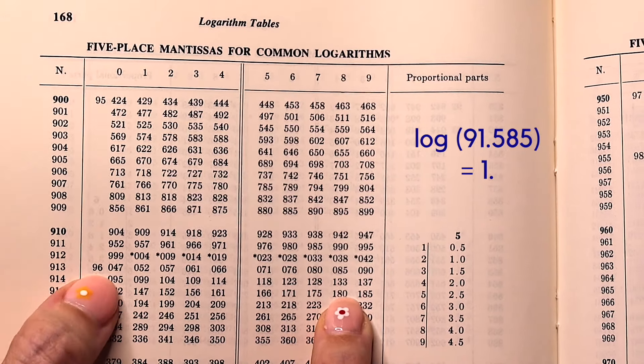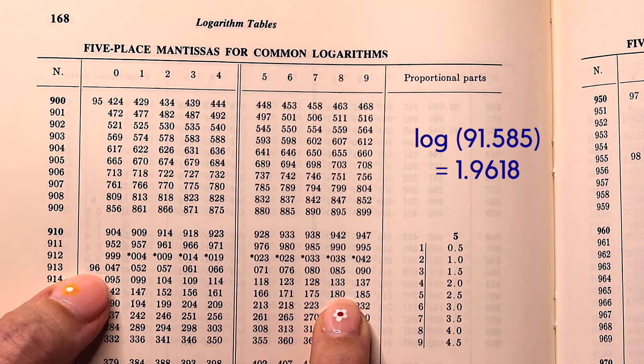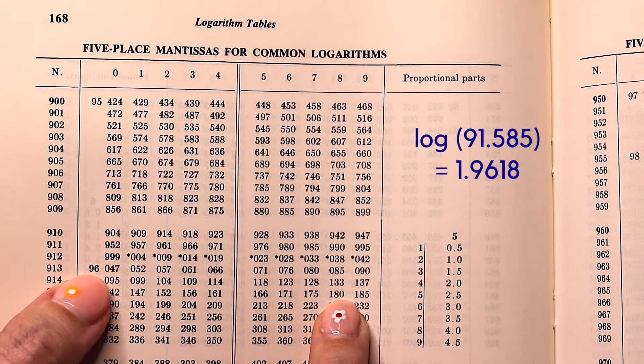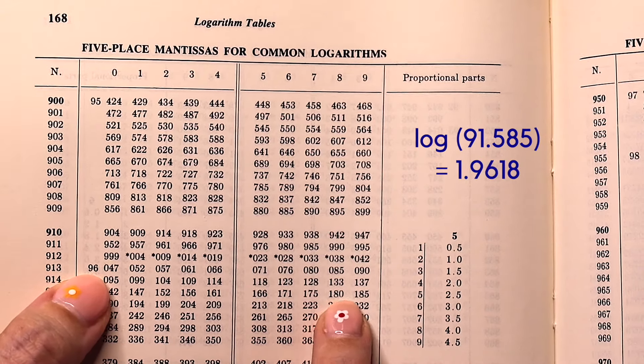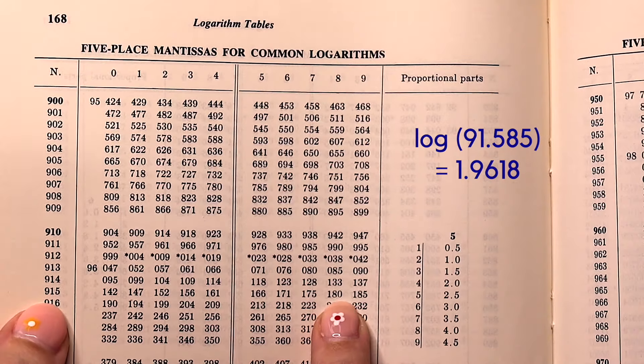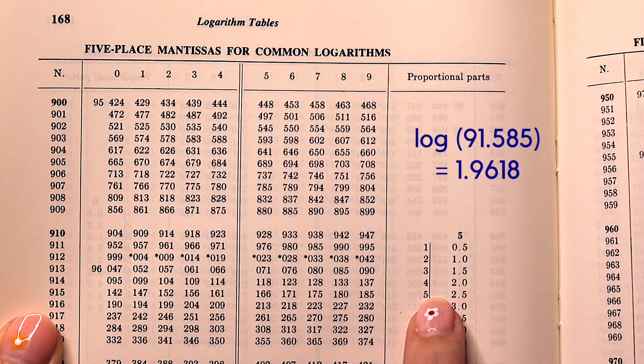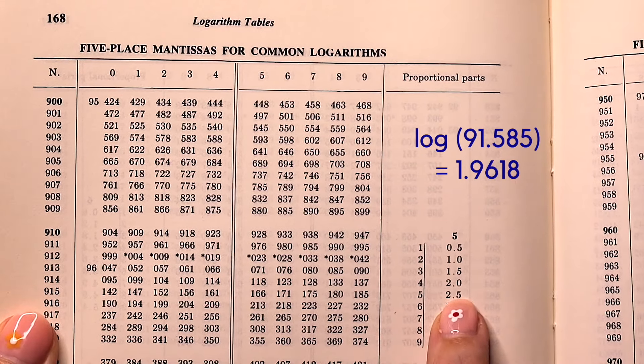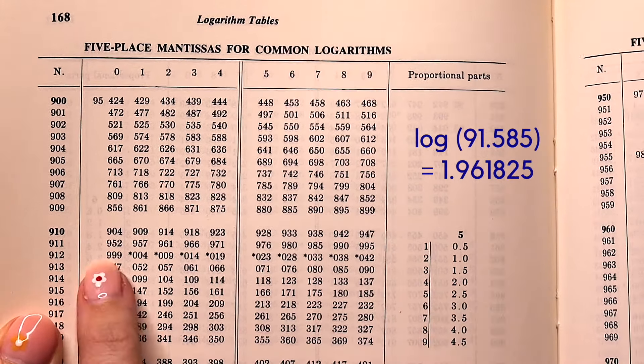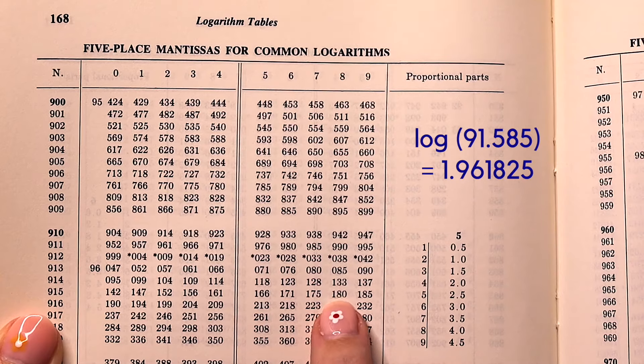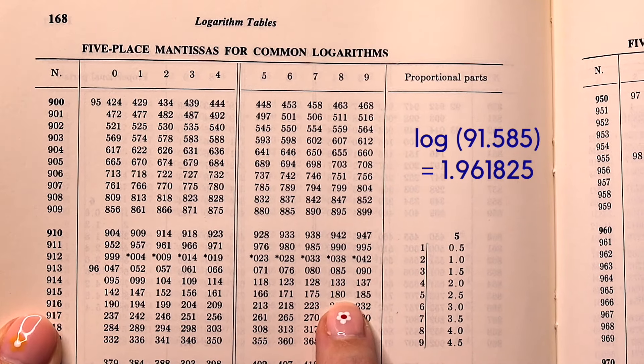Now the first two digits are missing off of this value which says 180, and the first two digits are over here. They are 96. So our logarithm is 96180.